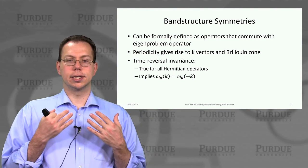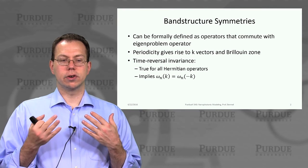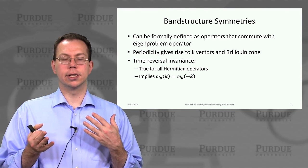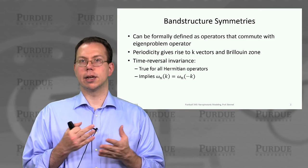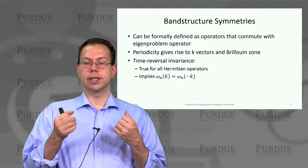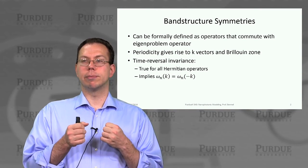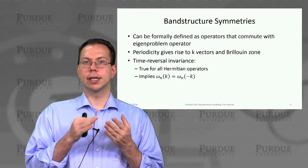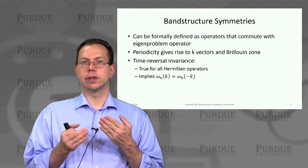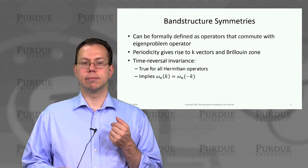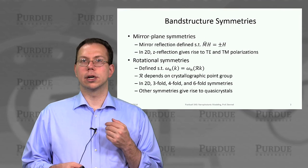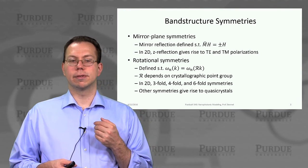Reversing time is equivalent to reversing the k-vector, which means ωₙ(k) = ωₙ(-k). That one-to-one mapping allows us to cut the irreducible Brillouin zone in half, which alone saves a lot of time in our calculations. But that's not the only thing we can do — there are other types of symmetries.